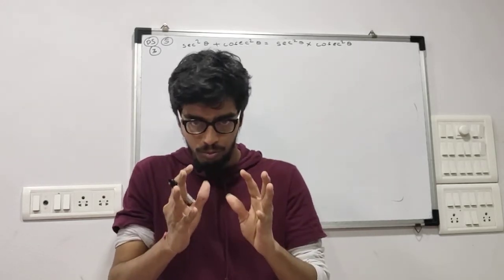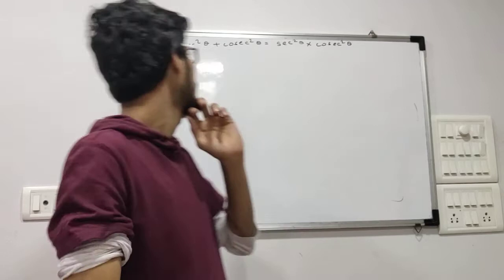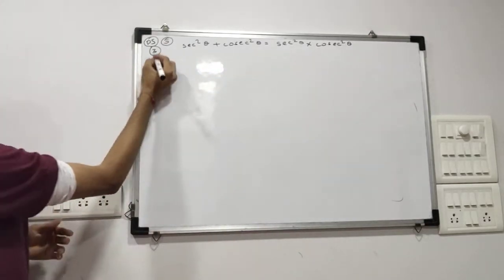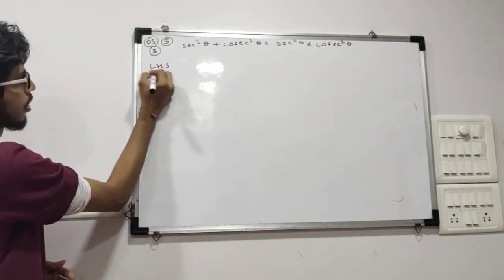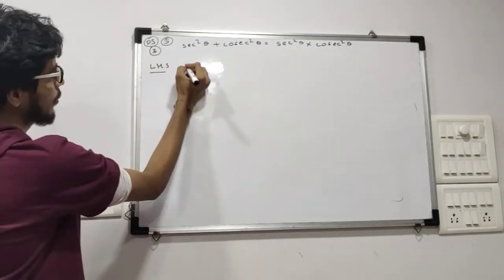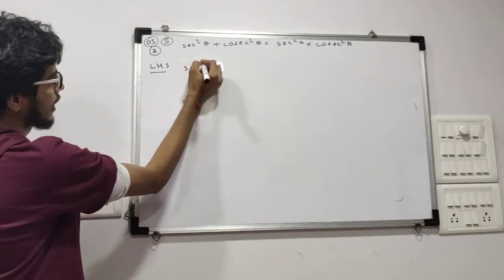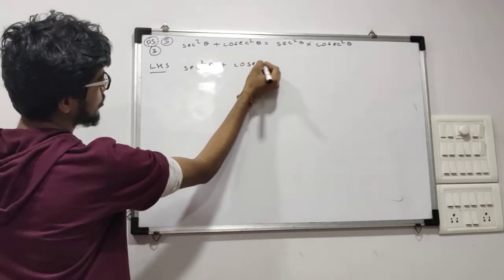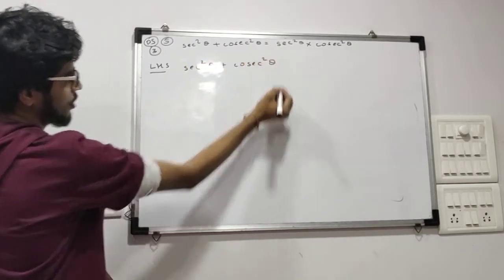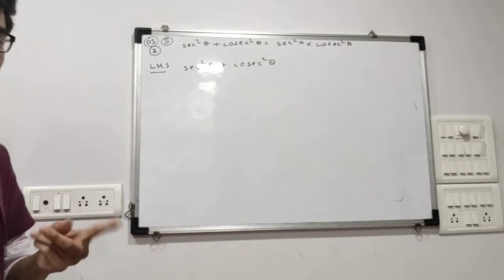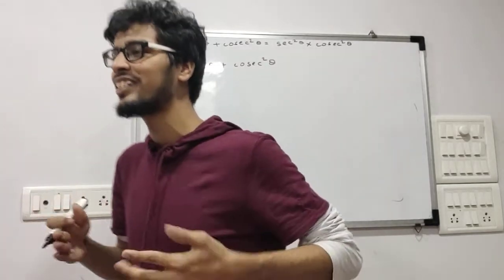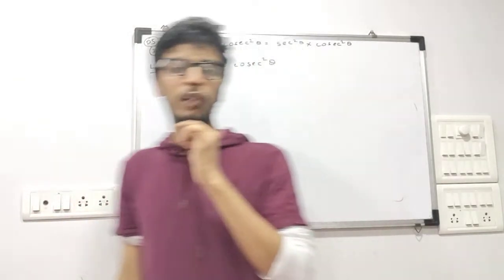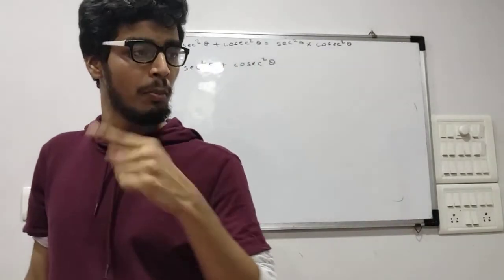Now in this question — 3rd question, problem is at 5 — let us look at LHS properly. We have sec squared theta plus cosec squared theta. Now sec and cosec are not the simplest form; the simplest form is sin and cos, so we have to convert sec and cosec into simplest form.